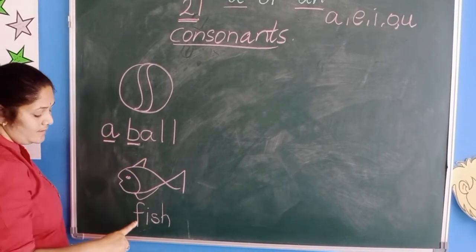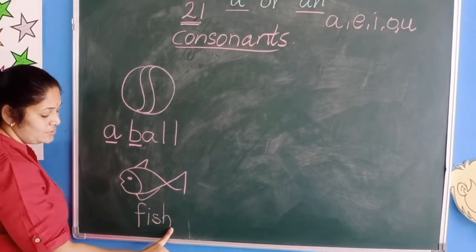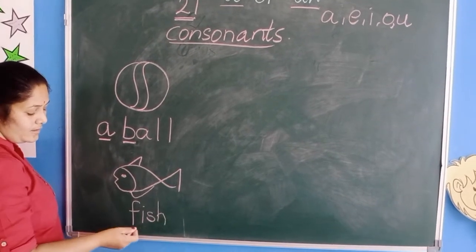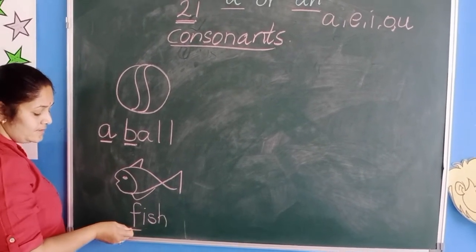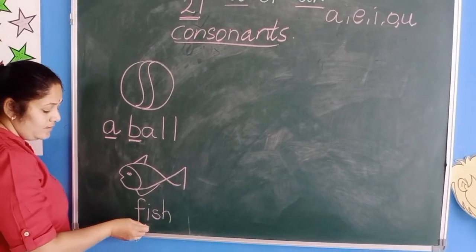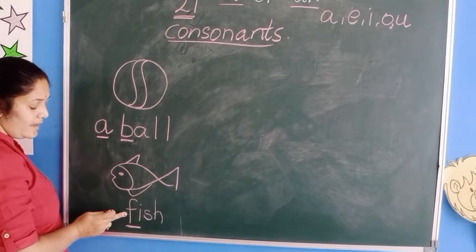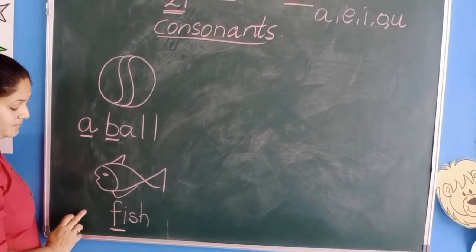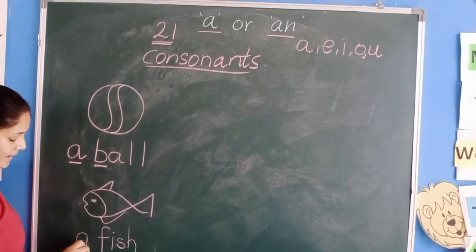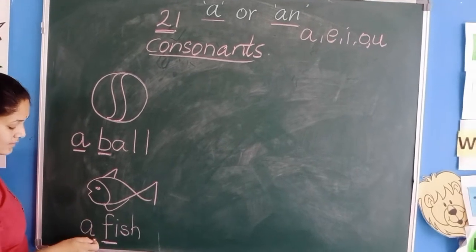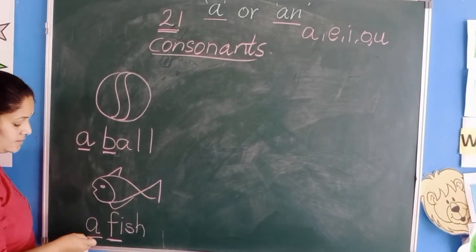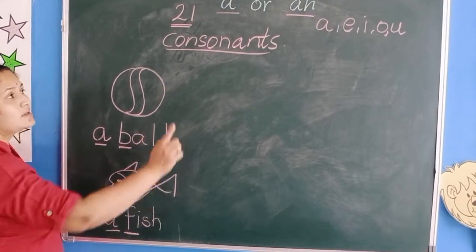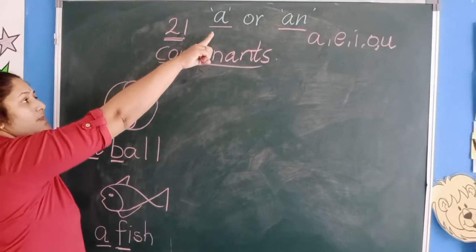Now the next example is fish. See the first letter — it is starting with F. So what will come? A. Got it? When the word starts with a consonant, we use A.